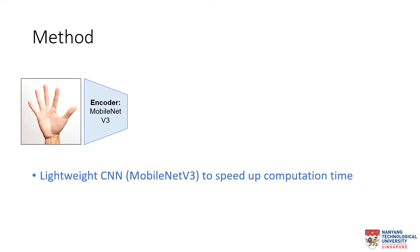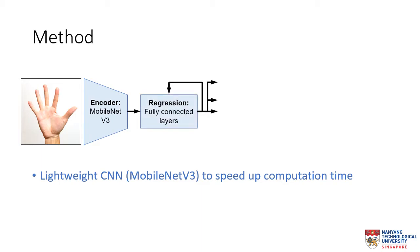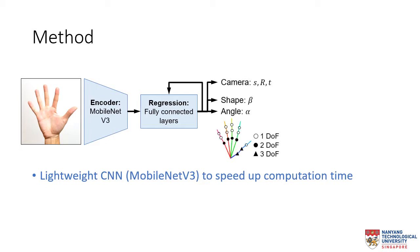Our proposed neural network takes in a color image and passes through an image encoder, which uses a lightweight CNN, the MobileNet V3, to speed up computation time. The extracted image features are then passed on to a 3D regression module to output the camera and hand parameters after a few iterations.